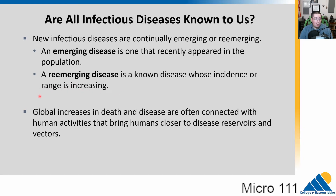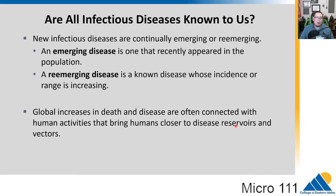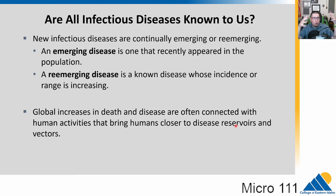Global increases in death and disease are often connected with human activities that bring us closer to disease reservoirs. As our population expands and people move into wilderness areas, we come into contact with animal reservoirs and vectors. Air travel means you can go from one place and within 24 hours be on the completely opposite side of the world, so diseases spread rapidly. As climate changes, animals and humans move, bringing new things into contact and leading to emerging diseases.